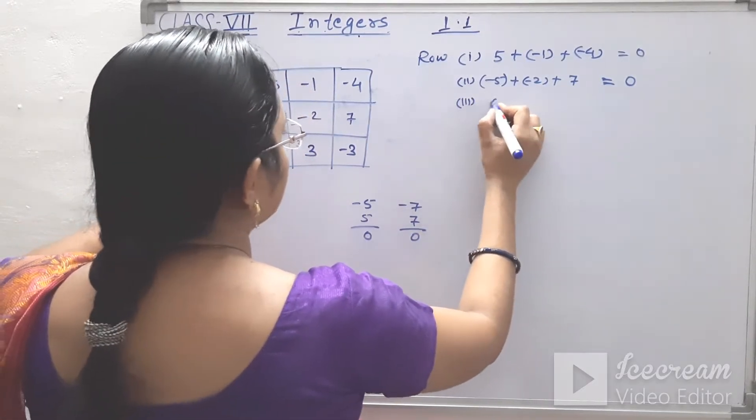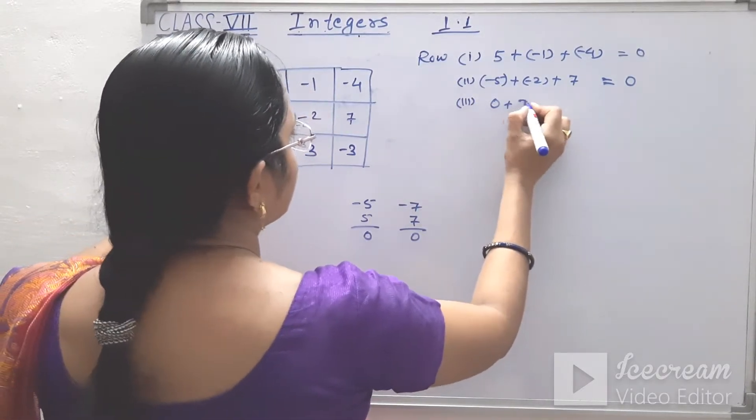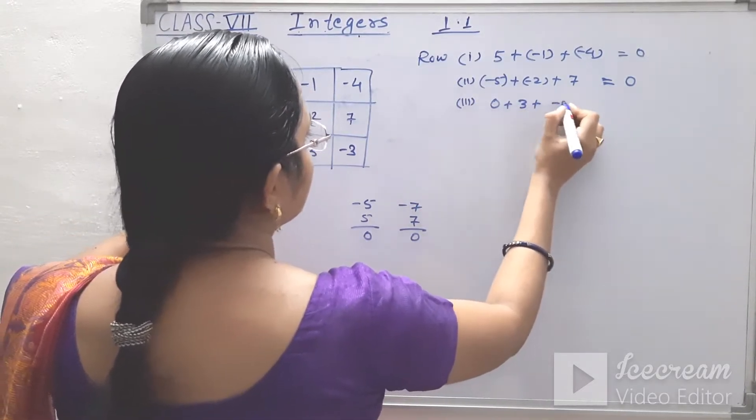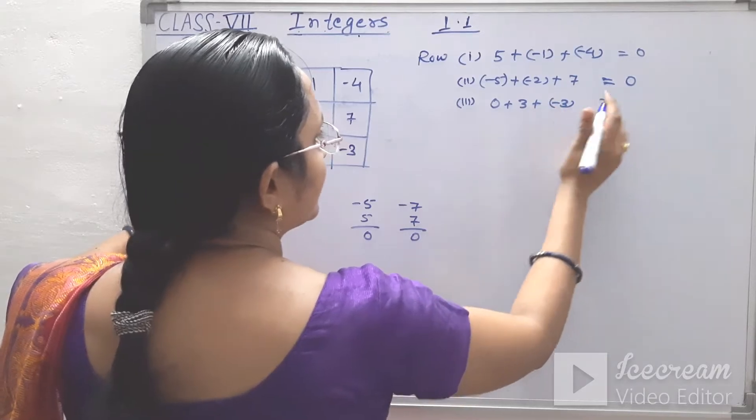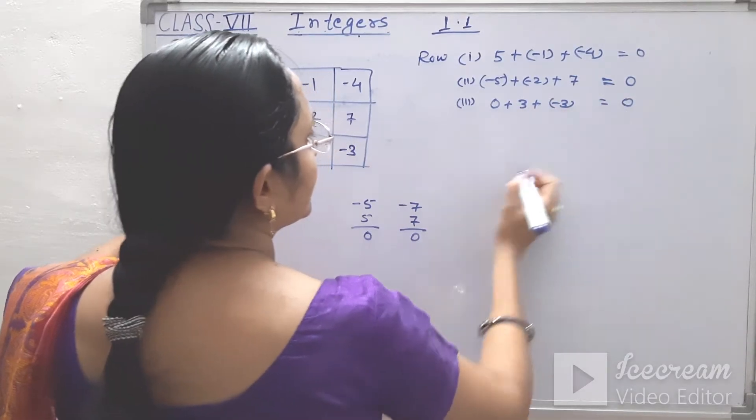In the third row, we see 0 plus 3 plus minus 3. Plus 3 and minus 3, the answer is 0.